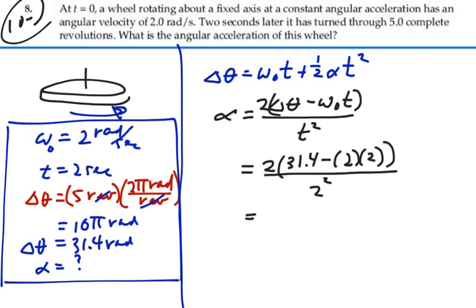And if we do that, what do we get? 31.4 minus four is 27.4 divided by two is 13.7 radians per second squared. So that's our answer.